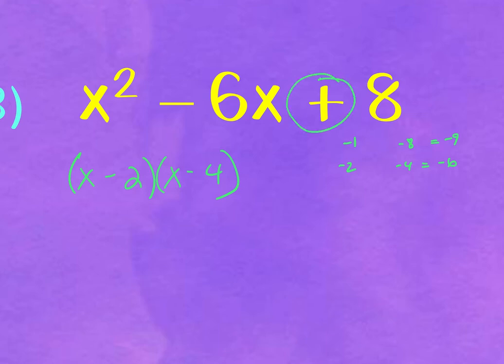If the last term is positive, both signs must be the same and match the middle term. If the last term is negative, one has to be positive and one negative, with the larger matching the middle term. If unsure, list all factors and keep adding until you find the one that works — this shortens the process, especially with something like 24 where you have multiple factor pairs.